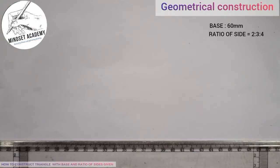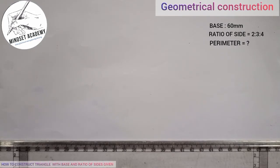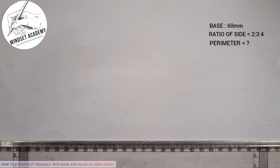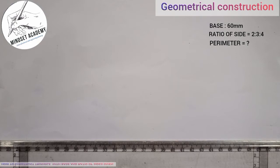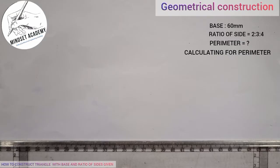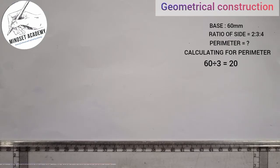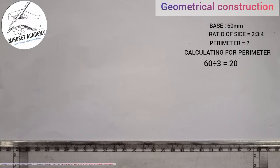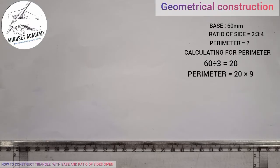We are only given one side of the triangle but not the perimeter. What you do is pick the middle number in the ratios — which is 3 — and divide the base by that value: 60 divided by 3 gives 20. Then multiply by the sum of the entire ratio: 2 plus 3 plus 4 equals 9. So 20 times 9 gives us 180 — our perimeter is 180.